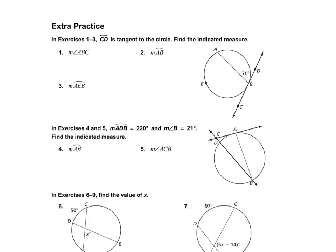For numbers 1 through 3, line CD is a tangent to the circle. Find the indicated measure. For number 1, we need to find angle ABC on this side. If the angle on the other side is 70°, then since they form a linear pair — a straight angle of 180° — this angle has to be 110°.